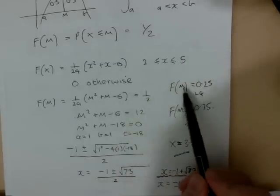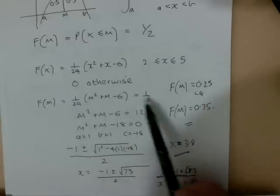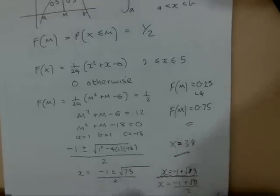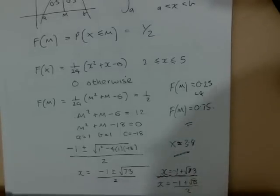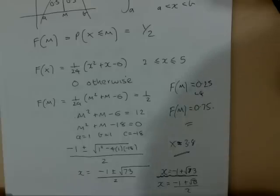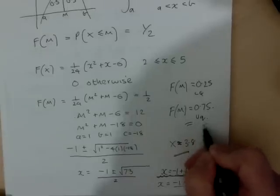Now if I wanted to solve the problem to find the lower quartile, I would have simply set F(m) equal to 0.25 and solved a different quadratic equation. So the method would have been exactly the same, except equal a quarter instead of equal a half. And similarly, if I was trying to find the upper quartile, then I would have set F(m) equal to 0.75 for the upper quartile.